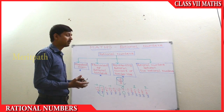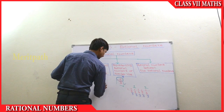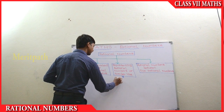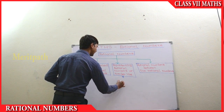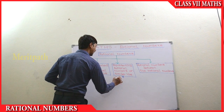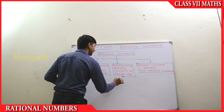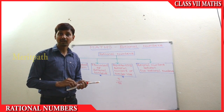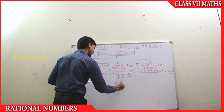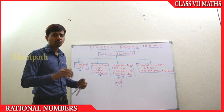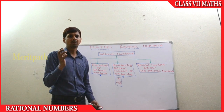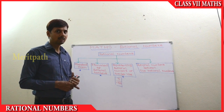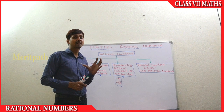Let's take another example. That is minus 7 by 56 — the denominator part is 56 and the numerator part is 7. We need to represent this on the number line. Any rational number should be in the standard form. This is not in the standard form because we have discussed earlier that the denominator of a rational number should be positive.